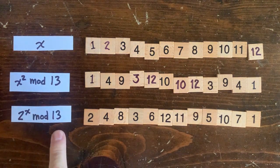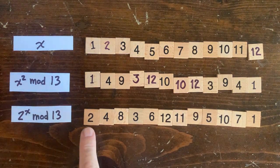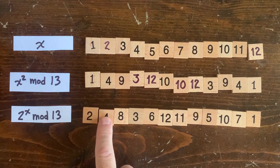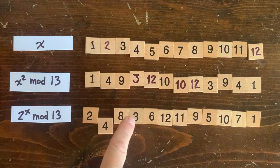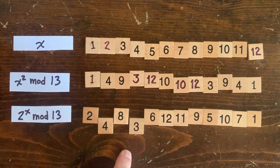Well, let's go back and look at 2^x mod 13, or any primitive root. But we know that 2 squared is a square, and we know that 2 to the fourth is a square, because it's 2 squared squared.